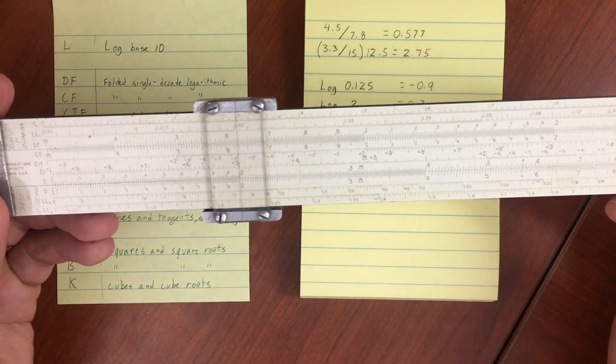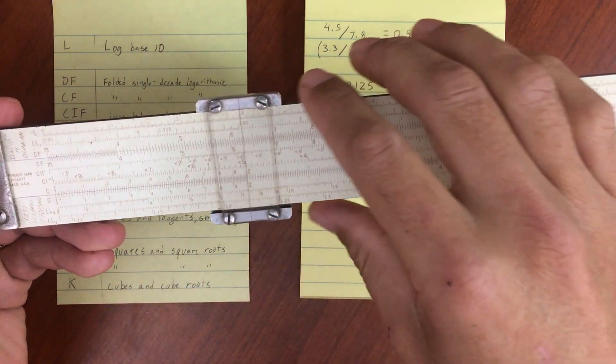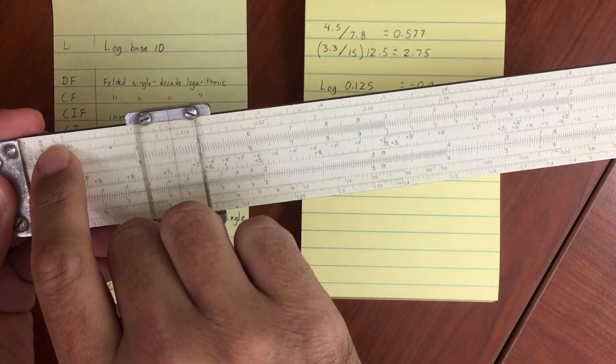I'll look quickly at some logs. So if you look at the D scale here, you can put the cursor on a number and read off the value on the L scale.